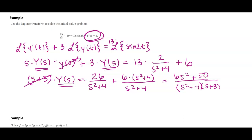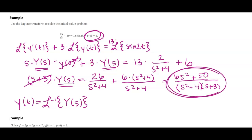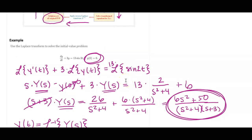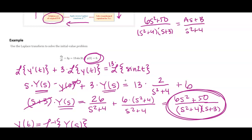Now I want to solve for Y of s by dividing that term to the other side. Now I have a partial fraction decomposition. In order to find little y of t, I need to take the inverse Laplace of big Y of s. I need to split this up — I have a quadratic piece on the bottom. So I'm going to say that 6s plus 50 over s squared plus 4 times s plus 3 must give me an As plus B over the quadratic term, and then just C over s plus 3.